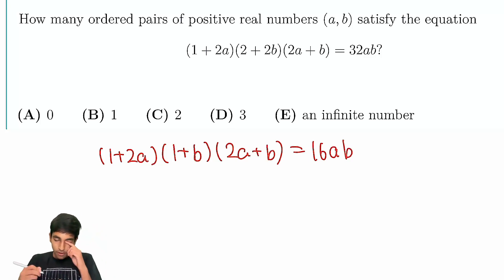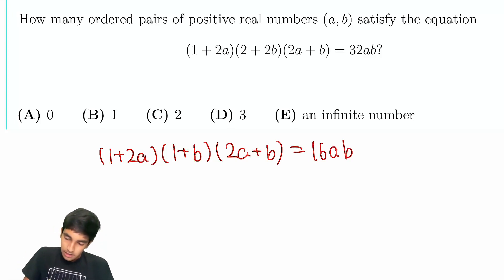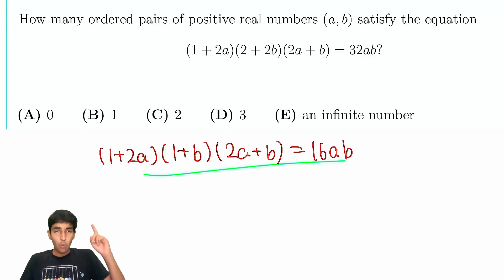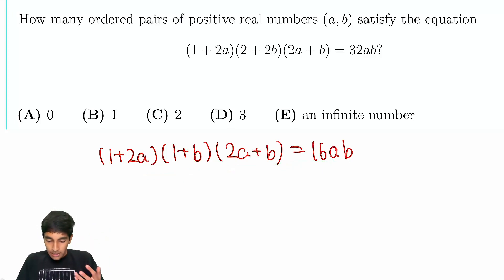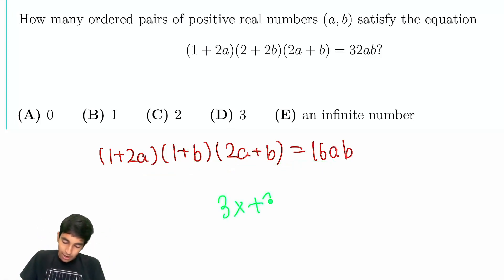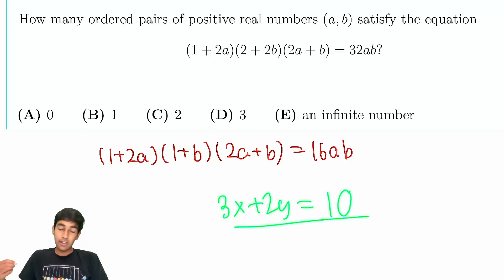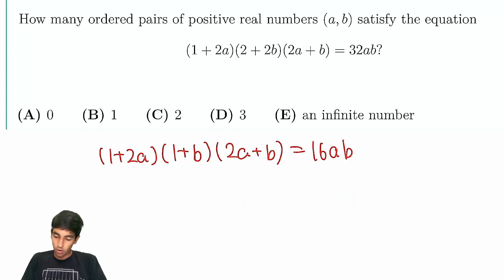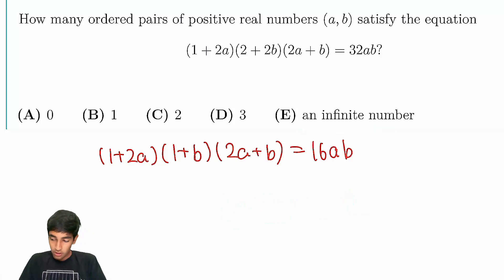For this problem, the first thing you should notice is there are two variables but only one equation. If we were dealing with linear equations — say 3x + 2y = 10 — we would have an infinite number of solutions. So maybe there are infinitely many solutions in this case too, but we'll see.